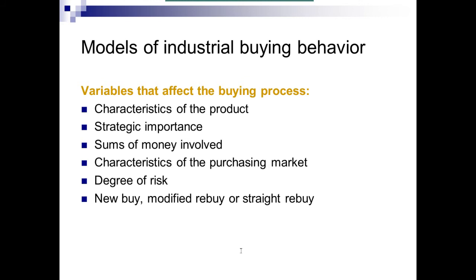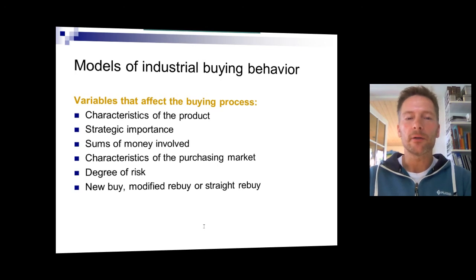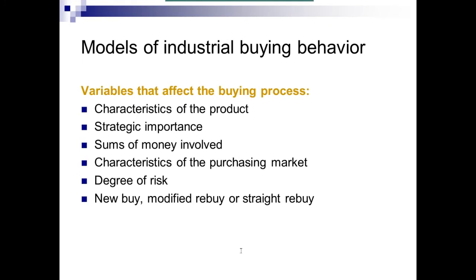There are plenty of variables that affect the buying process. The price of the product — whether high or low — and its strategic importance are key factors. We will zoom in on the Kralik segmentation model throughout the lectures, where strategic importance varies greatly between different products, requiring different management approaches. At the bottom end, it can also be a new buy, a modified rebuy, or a straight rebuy, each calling for a different buying process.